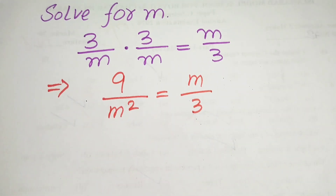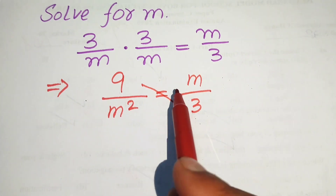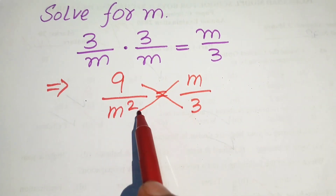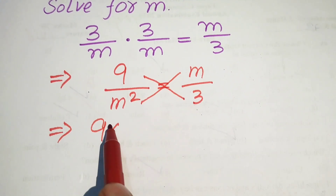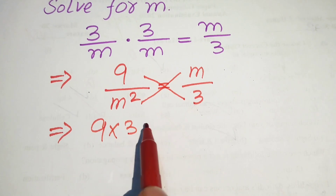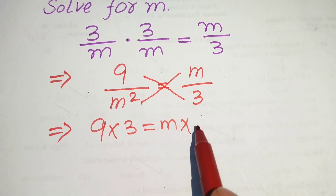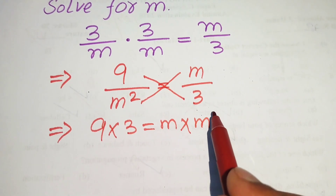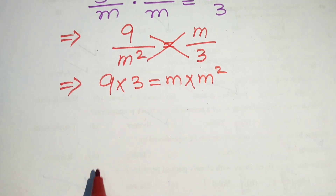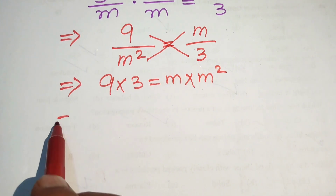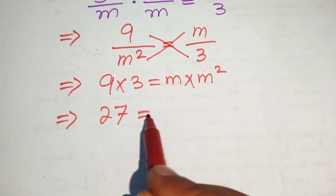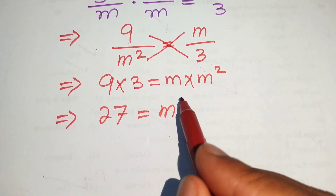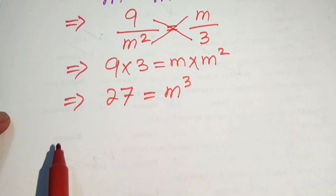Here we need to cross multiply the terms: we multiply 9 by 3 and m by m squared. So it is written as 9 times 3 equals to m times m squared. We have 9 times 3 is 27, and m times m squared equals m cubed.